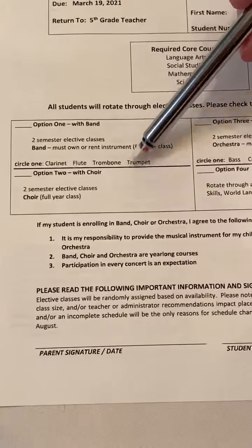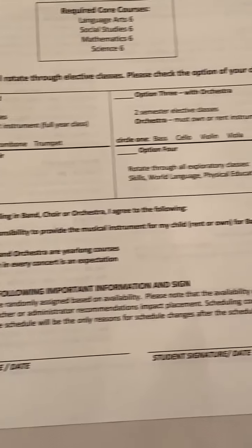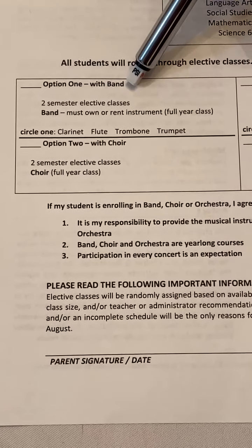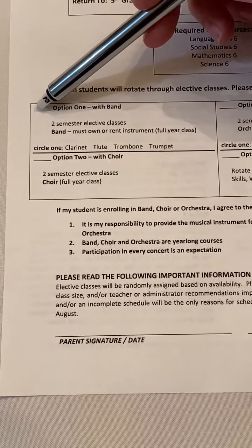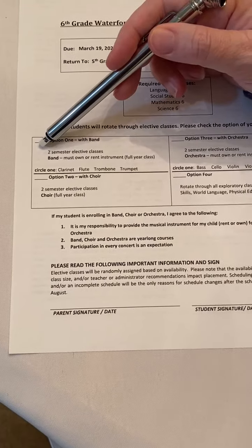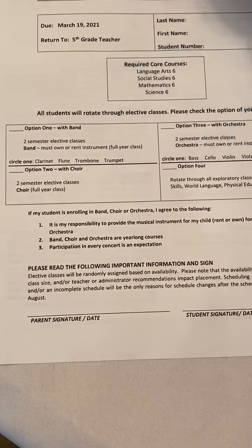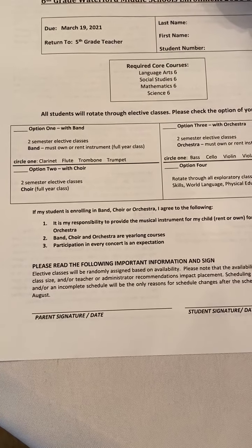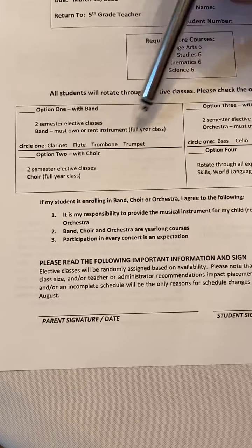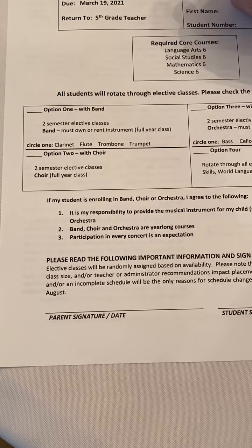All you have to do is check one of these boxes. Option one is with band. If you want to do band, you're going to mark this box and circle one of the instruments that you want to play. You have to rent or own the instrument, and it's a full-year class.